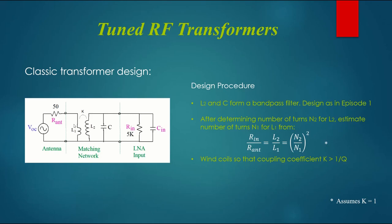Here's the classic way to match from a low source impedance such as 50 ohms up to a much higher impedance like 5k. We can use a transformer. This has been done for over 100 years. The transformer consists of two air-wound inductors on the same core with a coupling coefficient k. One side has a capacitor forming an LC bandpass filter or resonator.